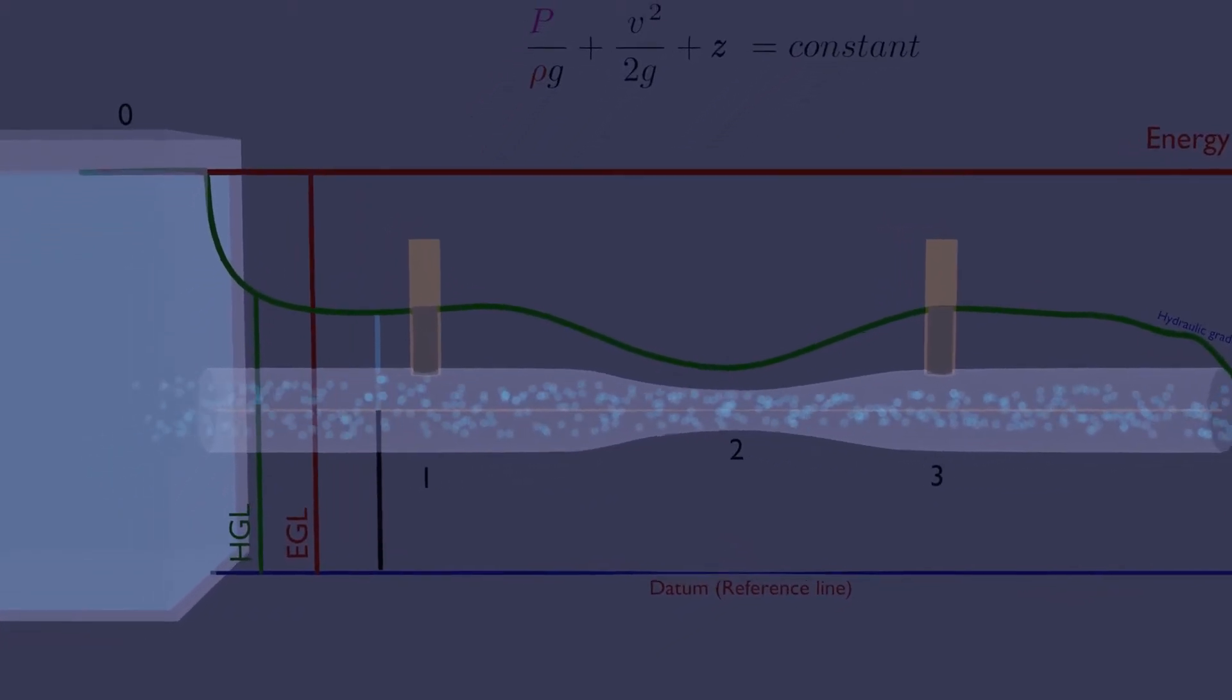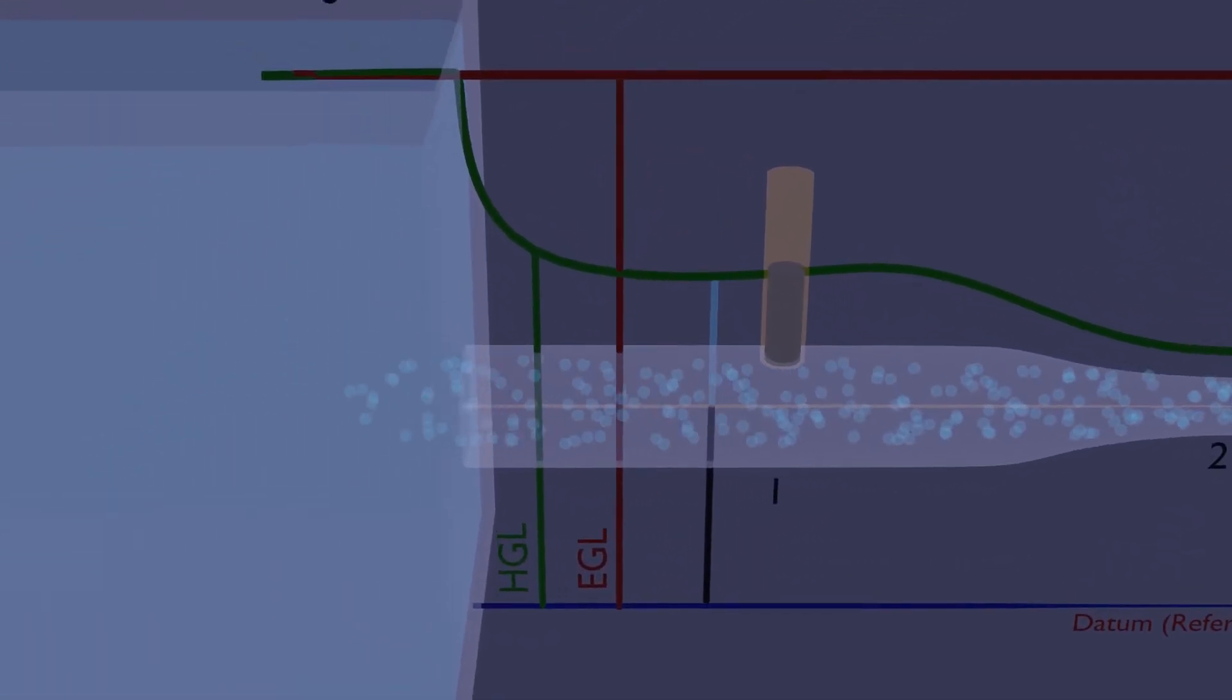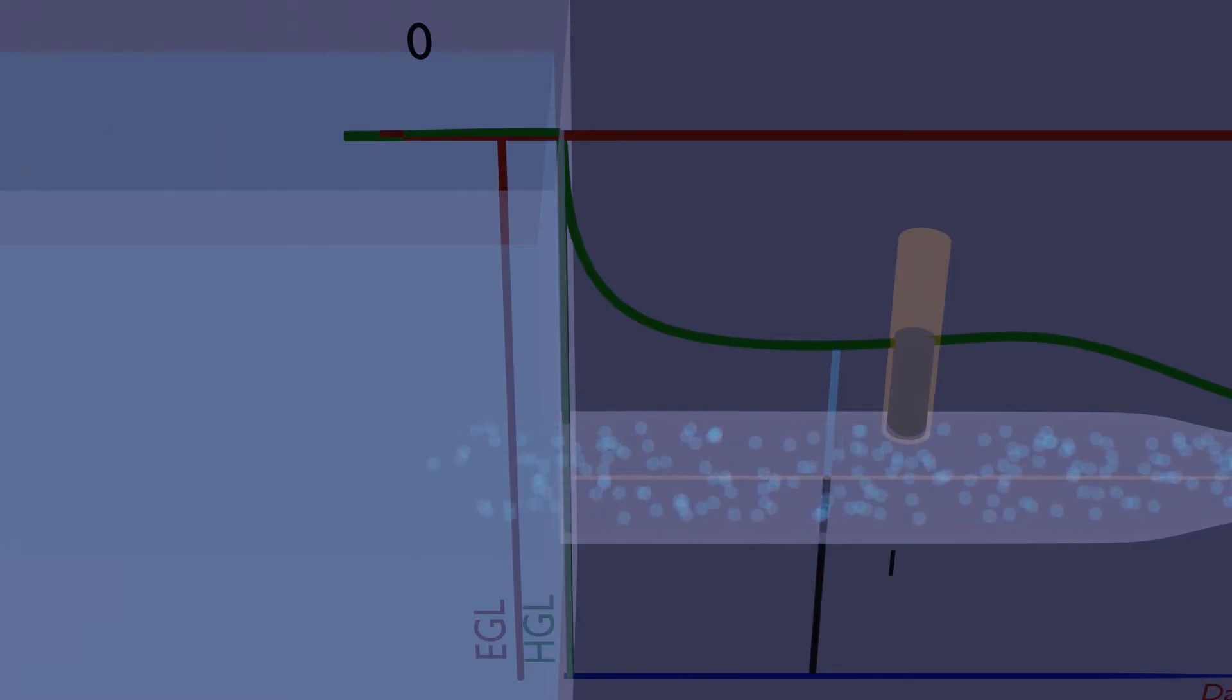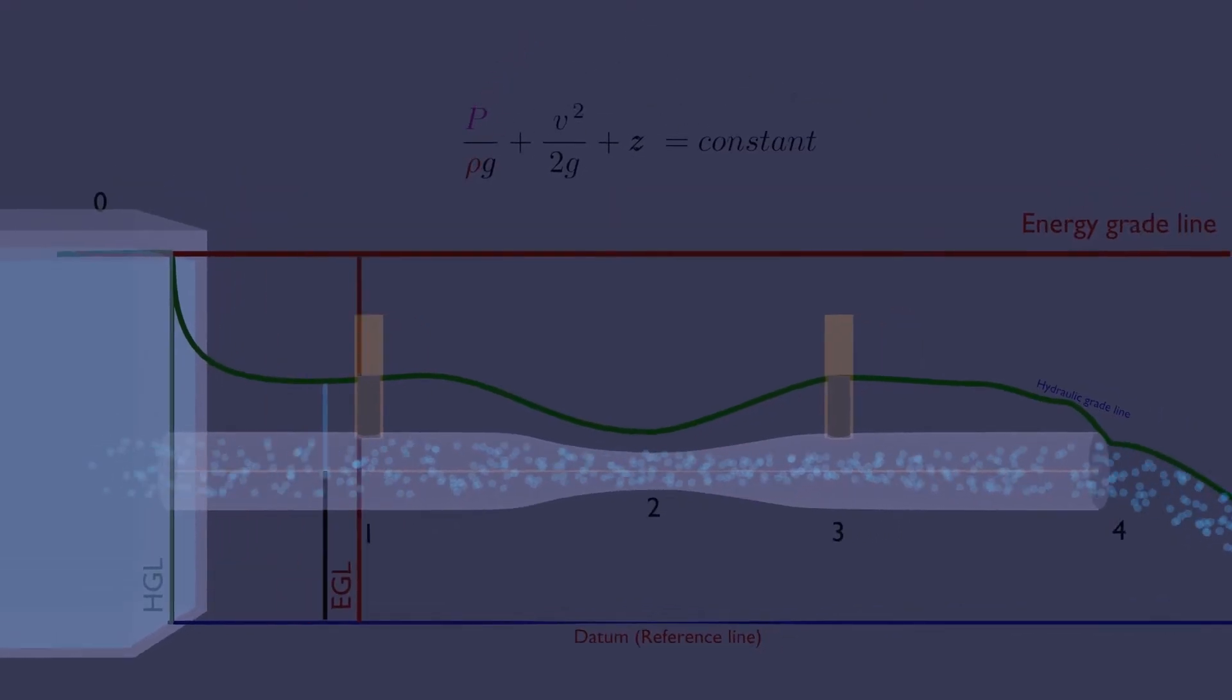At point zero, that is, at the liquid surface, EGL and HGL coincide with the liquid surface since there is no flow or velocity there. In an idealized Bernoulli-type flow, EGL is horizontal and its height is always constant.